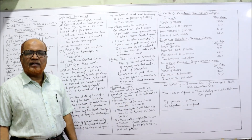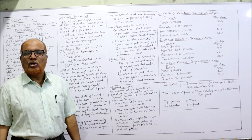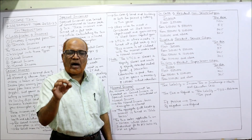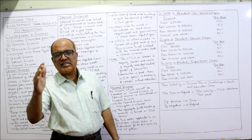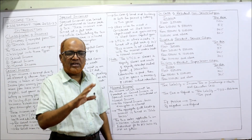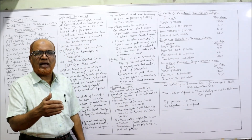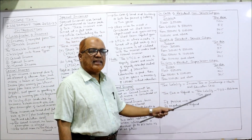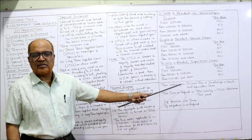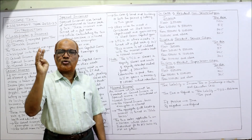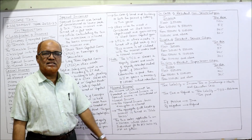Tax liability = basic income tax + surcharge (if applicable) + health and education cess at 4%. Surcharge is not applicable for every individual — it applies only if total income exceeds 50 lakh rupees. Health and education cess at 4% is mandatory in every problem.